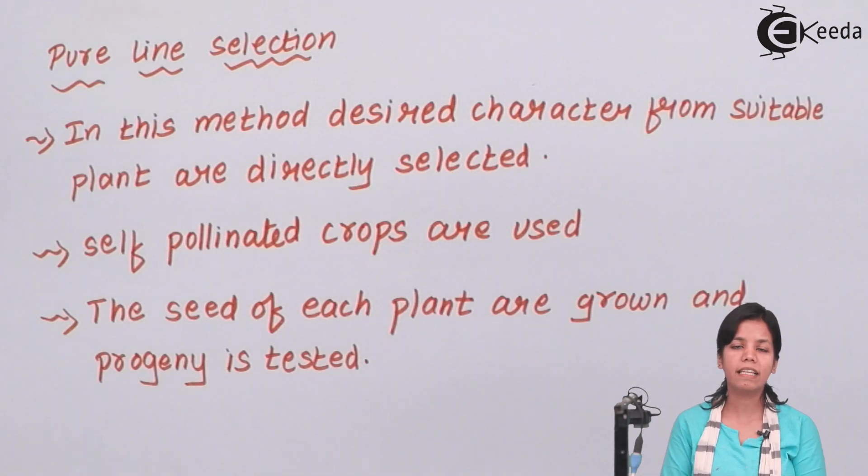So students in this part of the chapter we have studied how parents have been selected for plant breeding. I hope we all are clear about what are the methods or what are the requirements for selecting parents while plant breeding is done. Thank you.